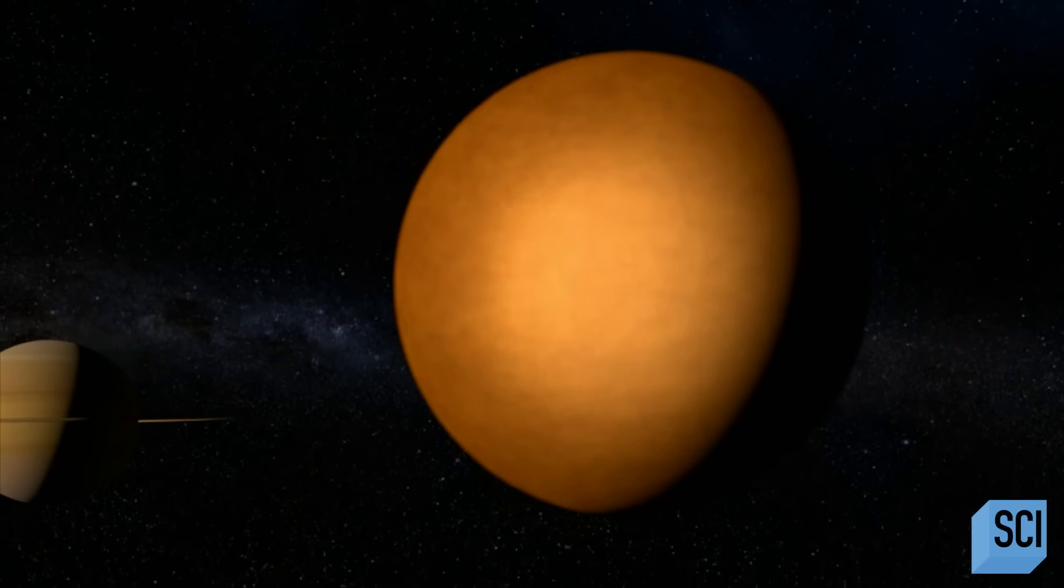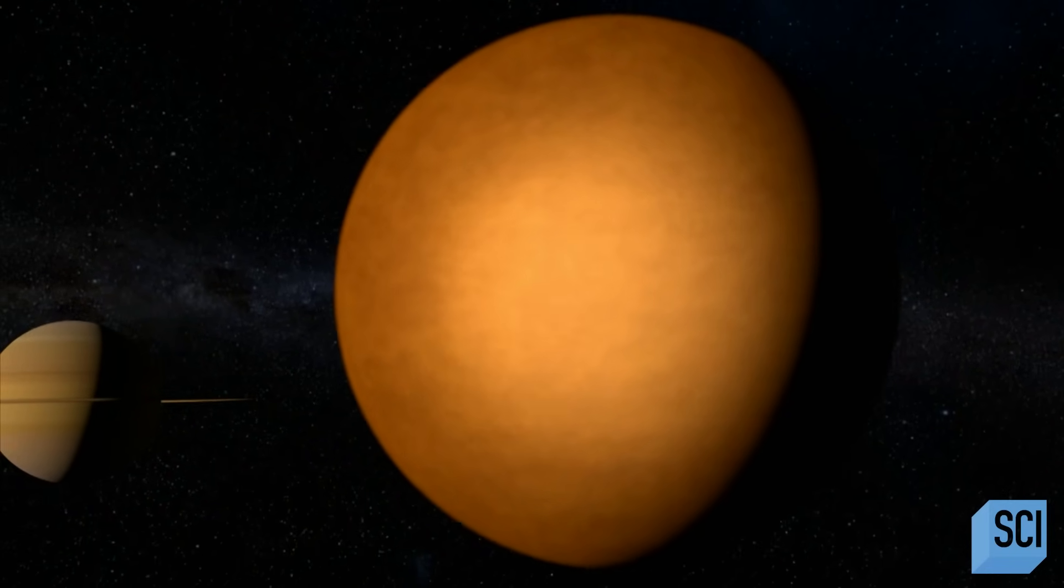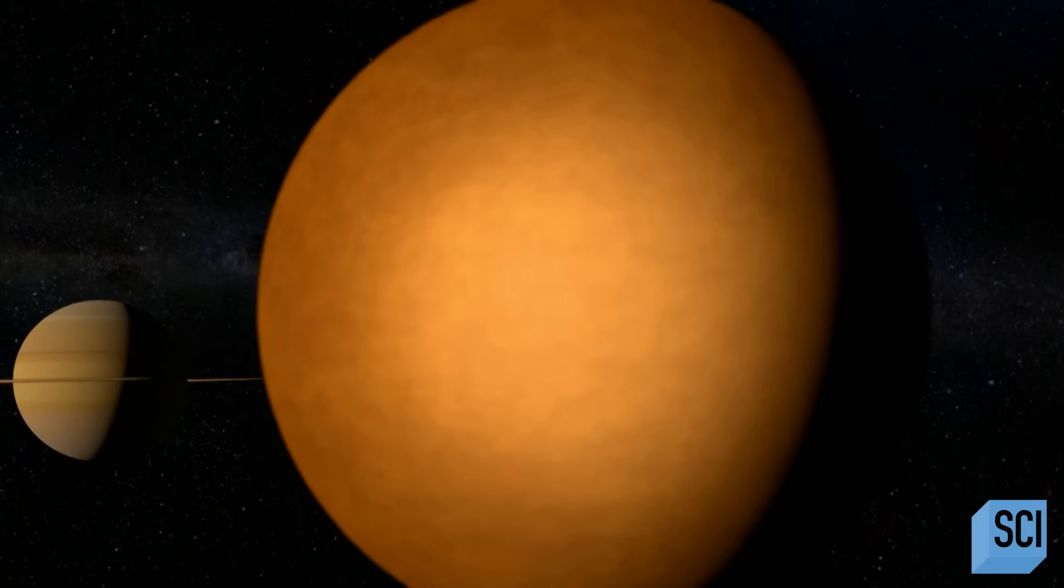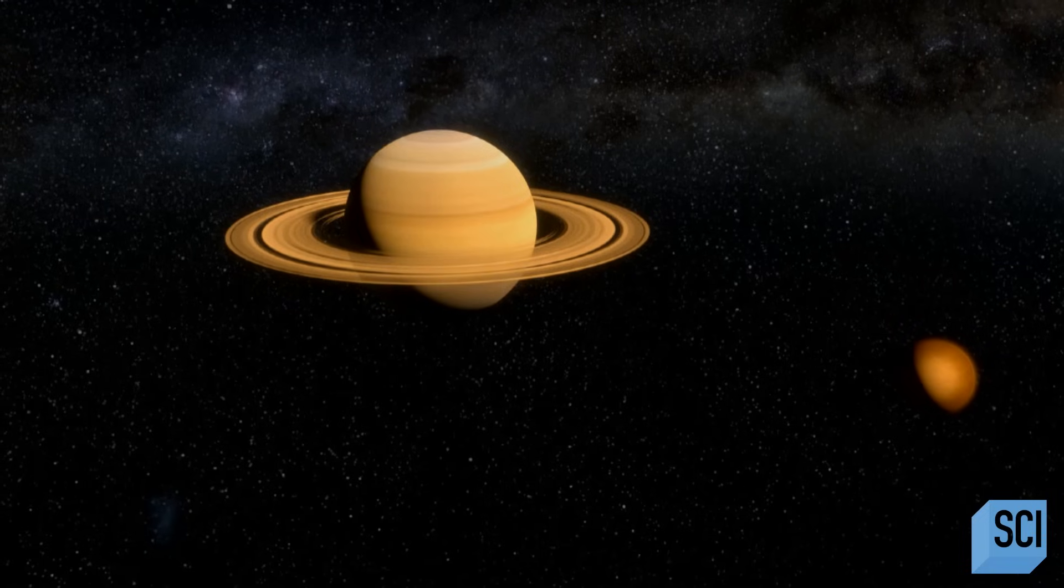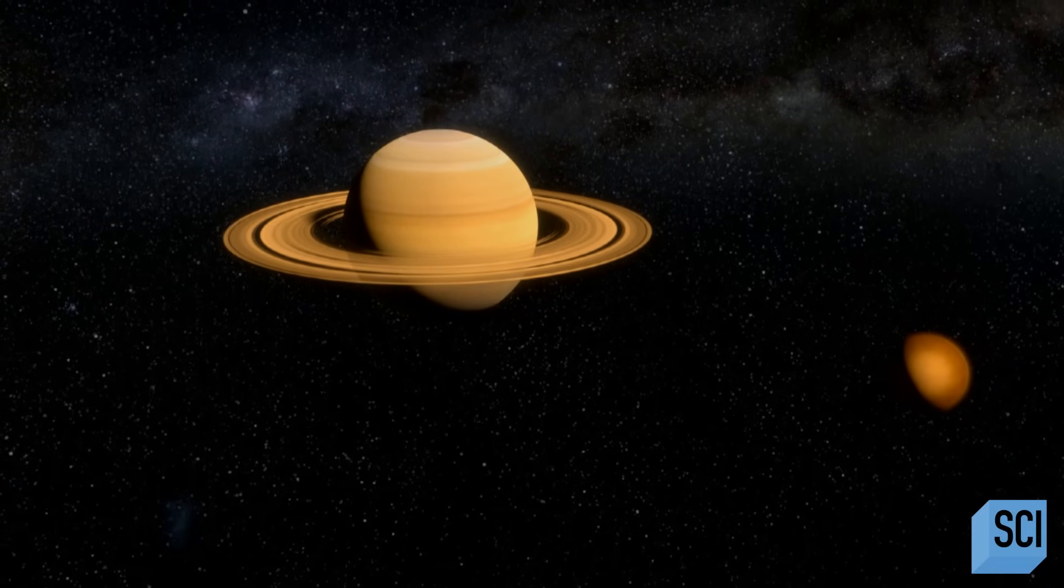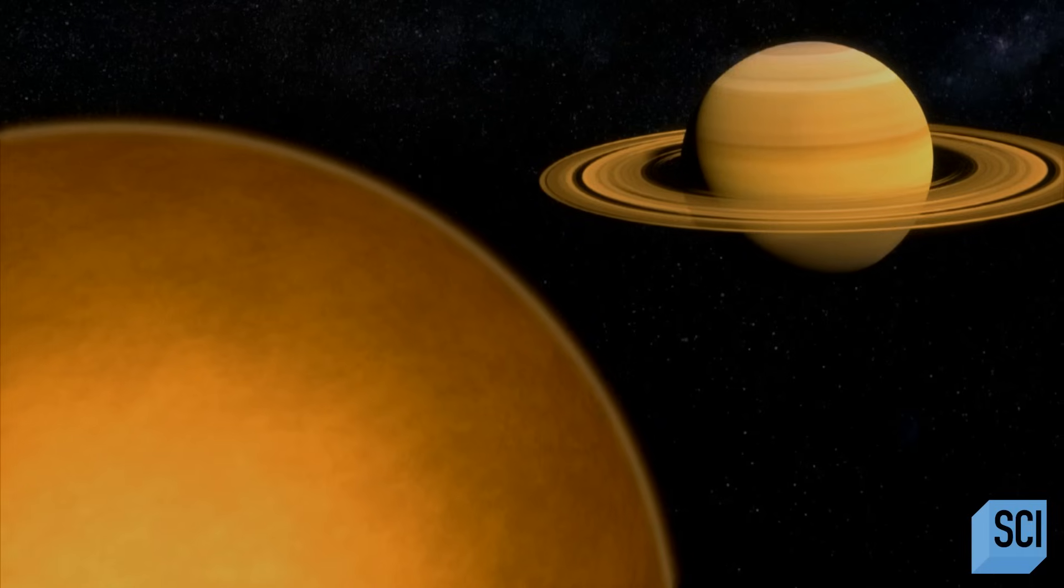This orange fuzzball is possibly the most alien world we have in our solar system. Titan, the largest moon of Saturn. Bigger than Mercury, it looks nothing like our own planet from space.